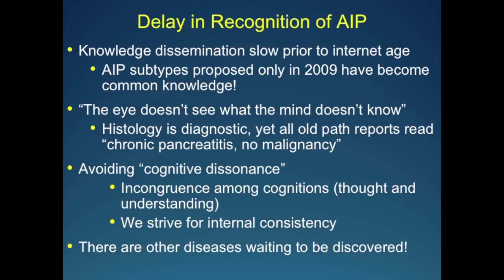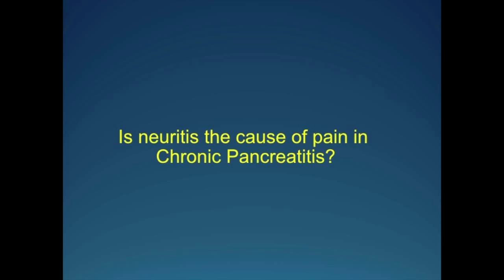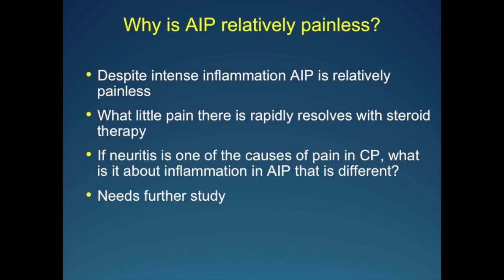Another common theme is neuritis as the cause of pain in chronic pancreatitis. But if that is the case, why is AIP painless? It has intense inflammation — as inflamed as any other chronic pancreatitis — yet there's very little pain. What little pain there is dramatically resolves with steroids; I have patients on fentanyl or PCA who come off it within 48 hours of starting steroids. The nerve is just as inflamed as in any other chronic pancreatitis, so this obviously needs further study.